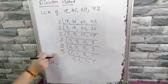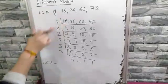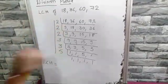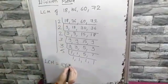This is the division method. In the division method, at last you have to find the product of all the prime numbers.